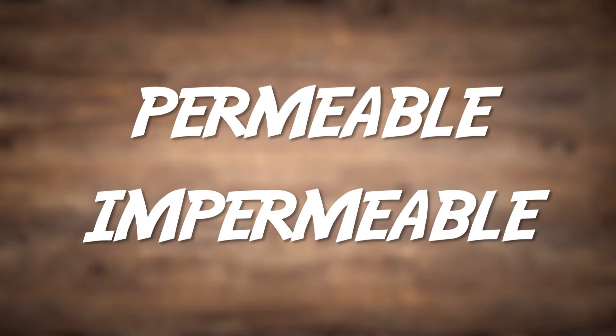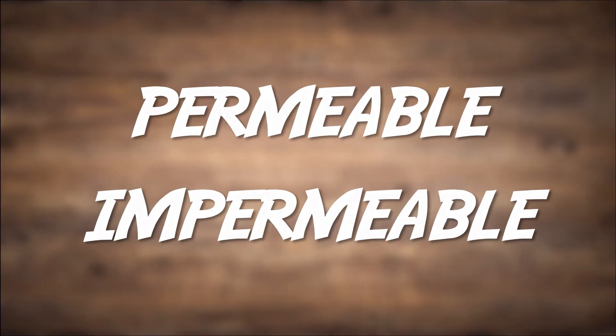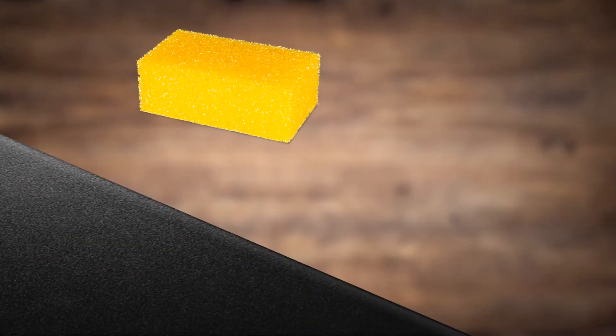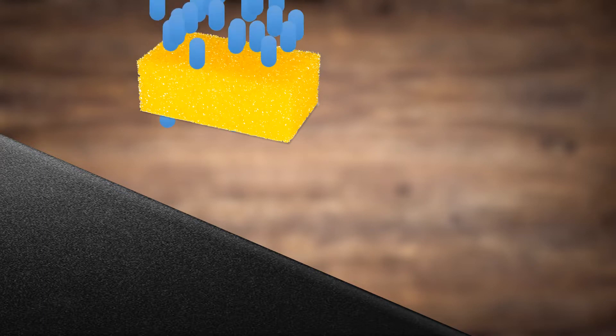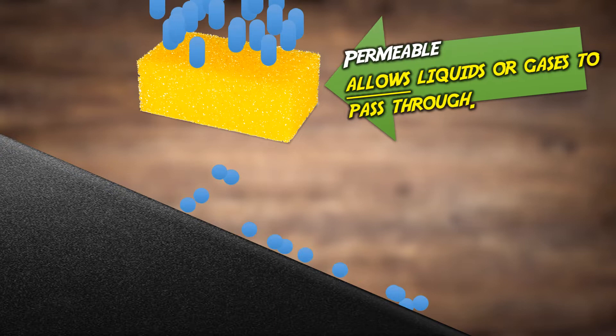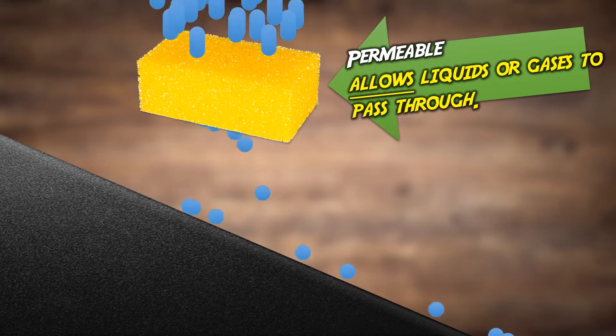The next two definitions are permeable and impermeable. Imagine a sponge suspended over a plastic waterproof slope, and a constant even trickle of water is poured on top. Of course, the water moves freely through the body of the sponge and will begin to drip from the bottom. This characteristic can be described as permeable, because it allows liquids or gases to pass through it.